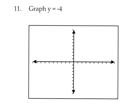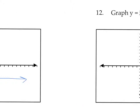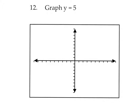Graph y equals negative 4: since it's y equals, we go to negative 4 on the y-axis, giving us a horizontal line. Horizontal lines have a slope of 0. For y equals 5, we go up to 5 on the y-axis and draw a horizontal line through y equals 5, also with a slope of 0.